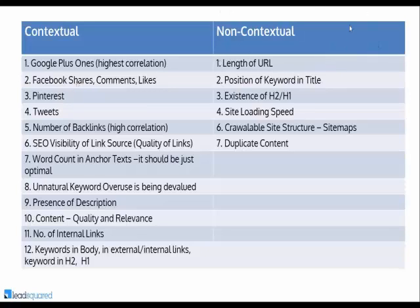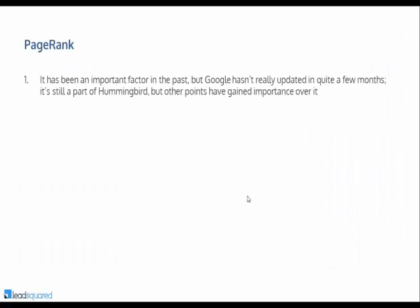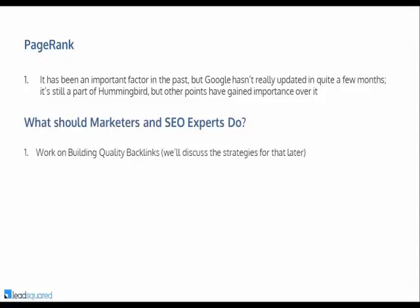Non-contextual factors affecting SEO include the length of the URL, the position of the keyword in the title — keywords should ideally be toward the beginning. The existence of H2 and H1 tags in your pages and posts, site loading speed — it shouldn't be very slow — sitemaps, which make it easy for Google to crawl you, and the absence of duplicate content. There's also page rank, which was important in the past but hasn't really been updated in quite a few months. It's still part of Hummingbird, but other factors have gained more importance. Work on building quality backlinks — this is an important individual factor regardless.